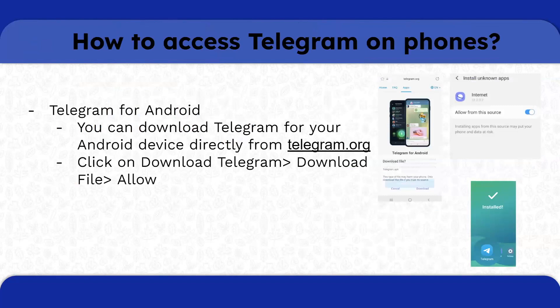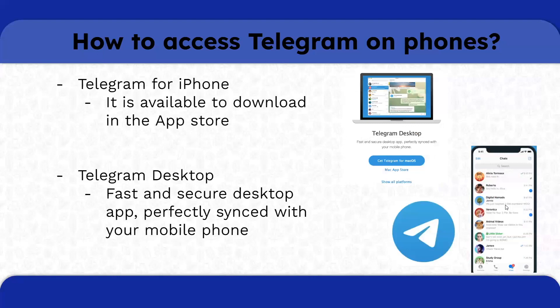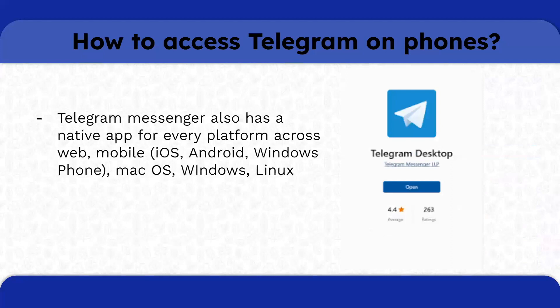To access Telegram on Android, download it from your Android device directly from telegram.org. You can click on download Telegram, download the file, and allow the installation. For iPhone, Telegram is available to be downloaded in the App Store. For desktop, there is a fast and secure desktop app, preferably synced with your mobile phone.